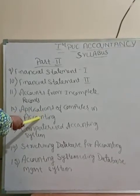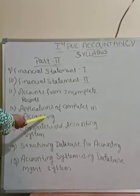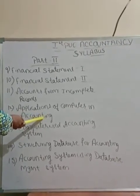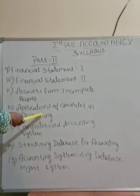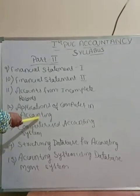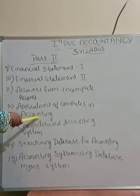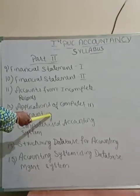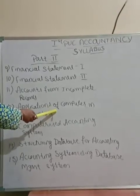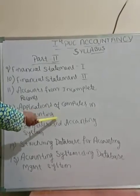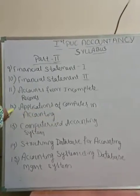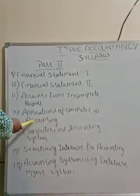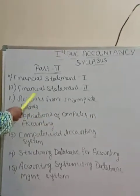We will also cover the evolution — that is, gradual changes — in computerized accounting, features of the computerized accounting system, and MIS — Management Information System — as well as the accounting information system. In this chapter we are going to know how computers have been used in accounting.